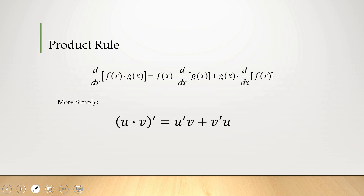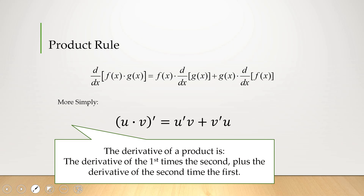If you have the product of two functions u and v being multiplied together and you want to find the derivative, it's u prime — meaning the derivative of u — times v, plus v prime times u. The way I memorize this: the derivative of a product of two functions is the derivative of the first times the second, plus the derivative of the second times the first.